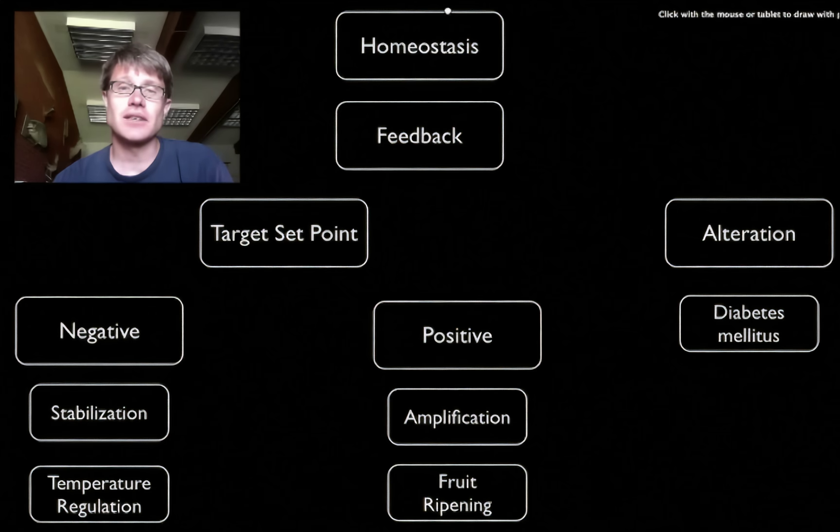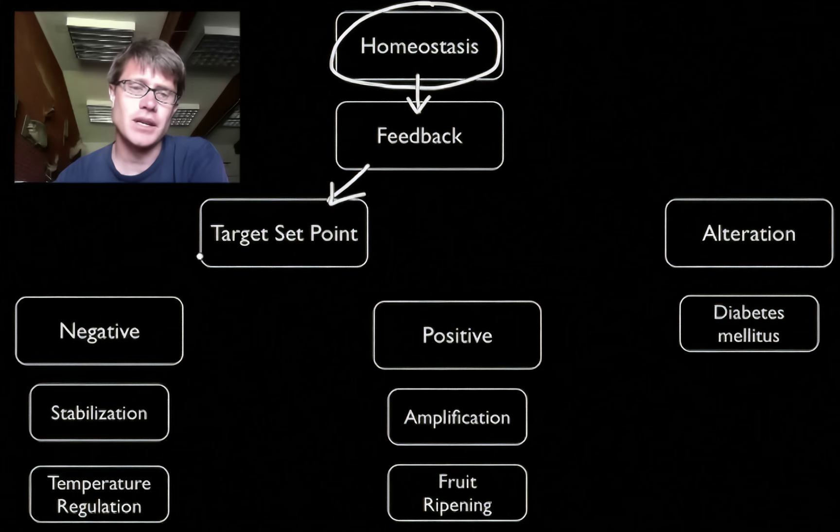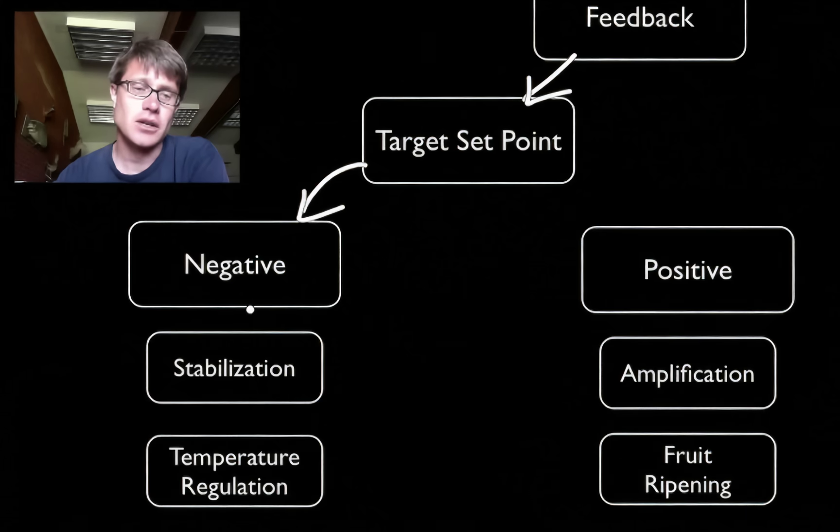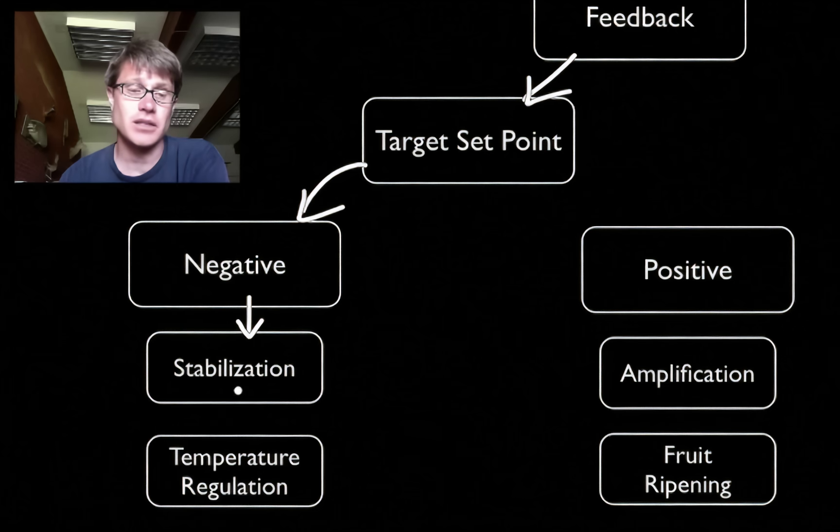In this podcast I'm going to start by talking about homeostasis. That's our internal environment. To maintain a stable internal environment we use feedback loops. With each of those you have a target set point. In a negative feedback loop you're going to move above or below that but try to stay as stabilized.